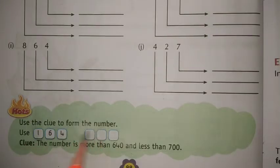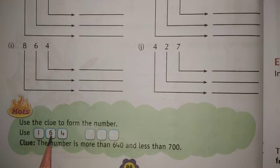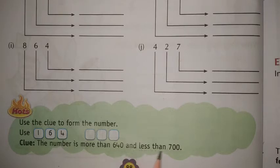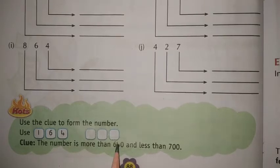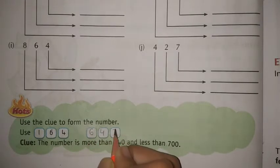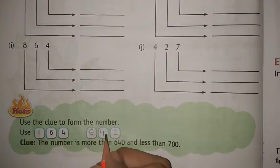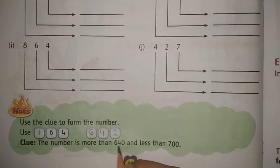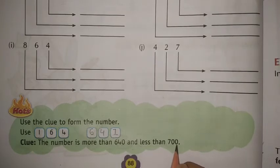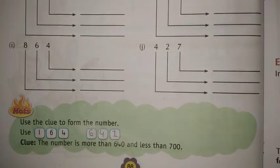Use the clue: form a number using digits 1, 6, 4. The clue is the number is more than 640 and less than 700. You can try 640, but that is not more than 640, so use 641. The digits 1, 6, 4 are all used and 641 is between 640 and 700.